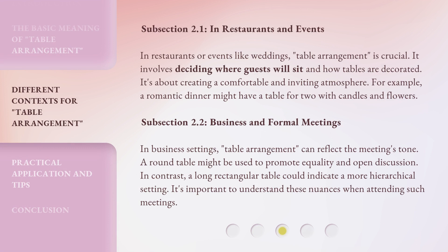In restaurants or events like weddings, table arrangement is crucial. It involves deciding where guests will sit and how tables are decorated. It's about creating a comfortable and inviting atmosphere. For example, a romantic dinner might have a table for two with candles and flowers.